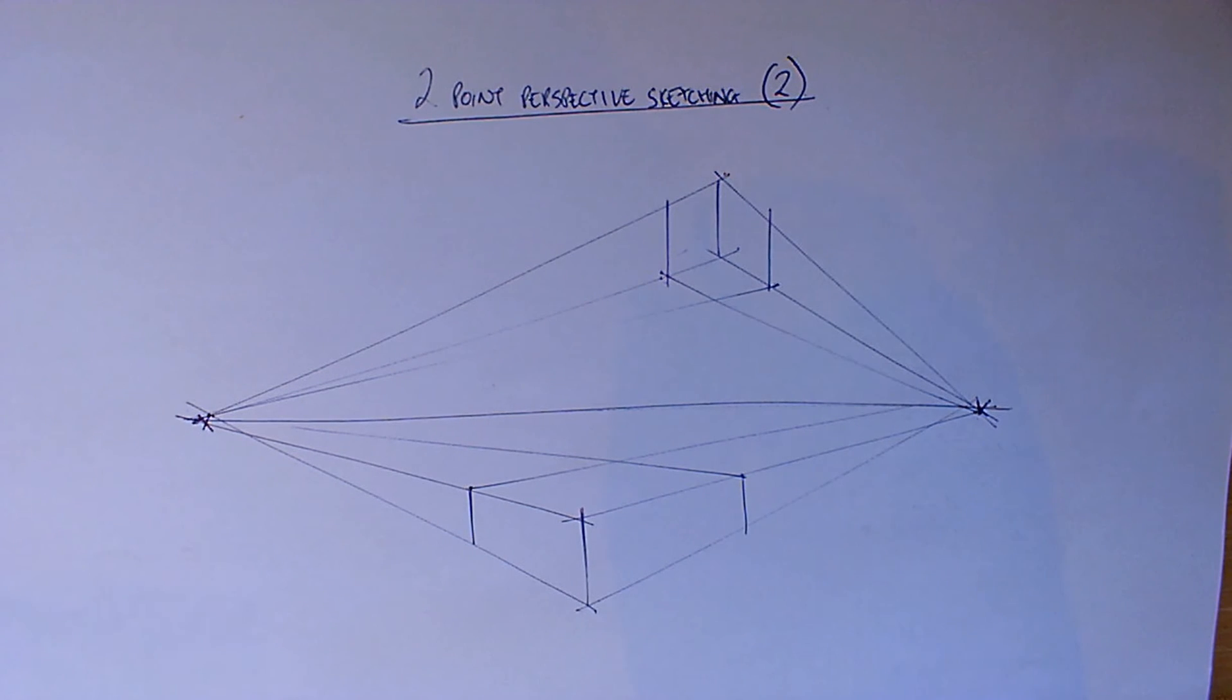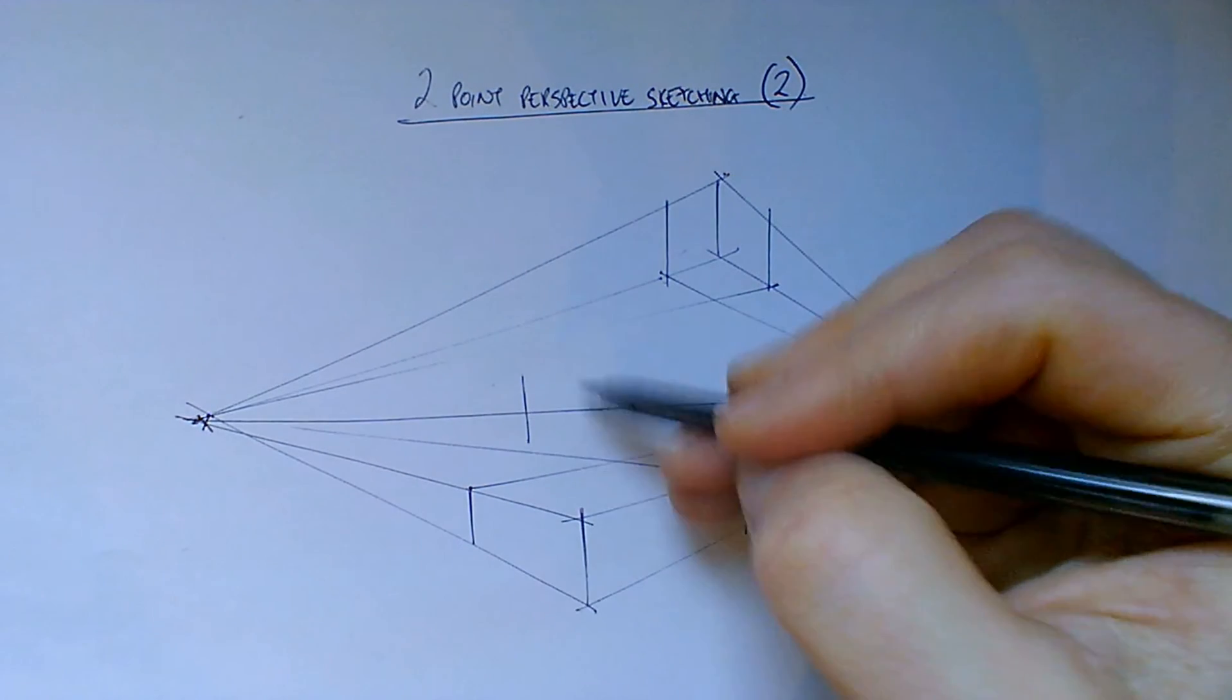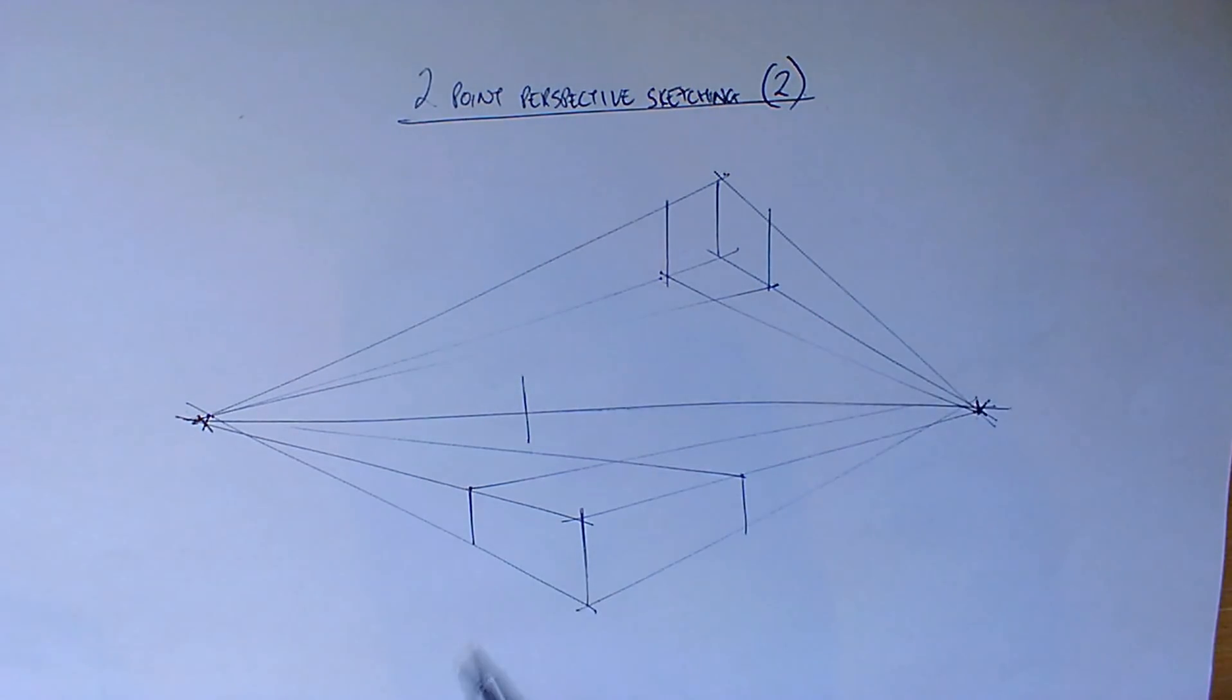We'll finish this off just with a final cuboid on the horizon line, so literally overlapping from top to bottom. So if we start again the same process, always starting with that front edge. Remember, draw your ghost lines over first and then it'll help get that straight. And always make sure that these lines are slightly longer than what we need.